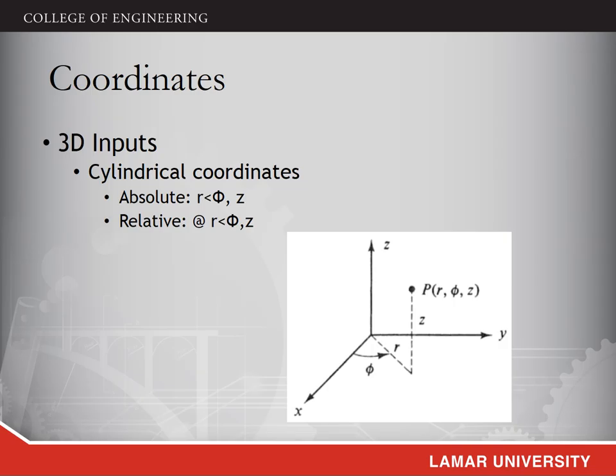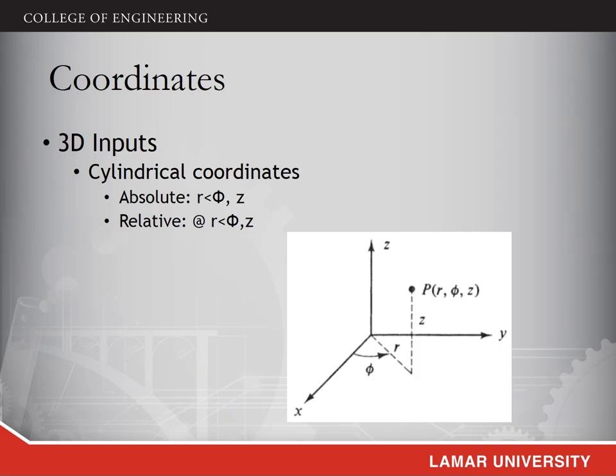The last type is the cylindrical coordinate system. In this system, the location of one point is defined by the distance from the projected point to the origin, r, the angle between the projected line and the positive x-axis, phi, and the height of the point, z. It also has both absolute and relative coordinates. The format for the absolute coordinate is (r<phi, z), and you can add the @ symbol in front to define the relative coordinates. So these are the definitions of the coordinate systems in AutoCAD.